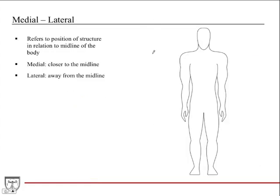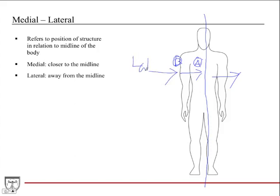Two terms describe positions of structures in relation to the midline of the body: medial and lateral. If you draw a line down the middle of the body, medial is closer to that line and lateral is away from it. Structure A is medial to structure B; B is lateral to structure A. Looking at someone from the side is the lateral view. The inner surface of the arm would be the medial side of the arm.